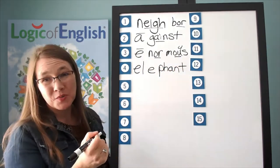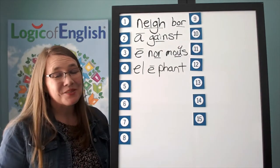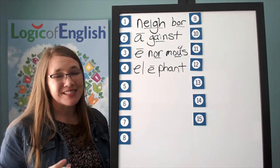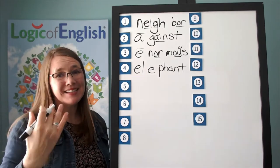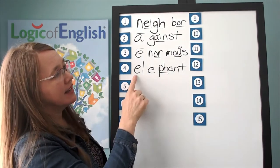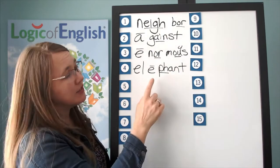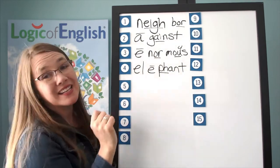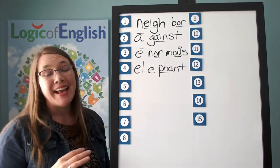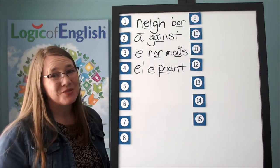How do we mark it? We'll put a line over the E. Why did it say its long sound? A-E-O-U usually say their long sounds at the end of the syllable. We'll underline the F. E-L-E-F-A-N-T. Elephant. Any vowel may say uh or ih in an unstressed syllable.